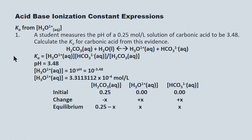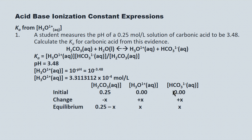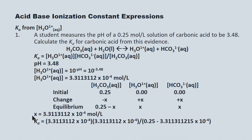Now we complete an ICE table. We're given the initial concentration of carbonic acid, so we assume the initial concentrations of the other species are 0. The carbonic acid decreases by negative x, while the concentrations of the two products appear at positive x each, because the stoichiometry is 1:1:1. At equilibrium, the carbonic acid concentration is 0.25 − x, while the concentrations of hydronium and hydrogen carbonate ion are both x. We've already solved for [H3O+], so we plug that value in for x and solve for Ka, getting a value rounded to sig figs of 4.4 × 10^(−7).